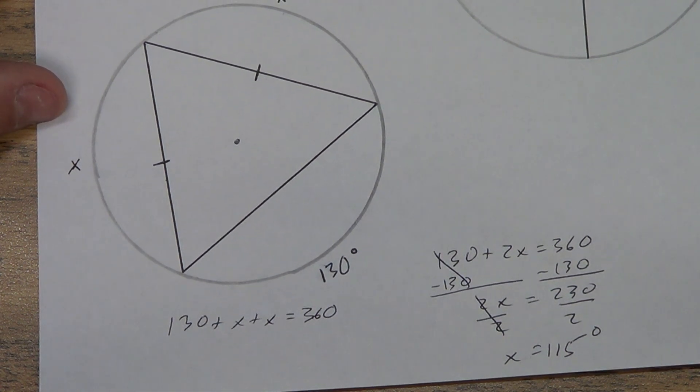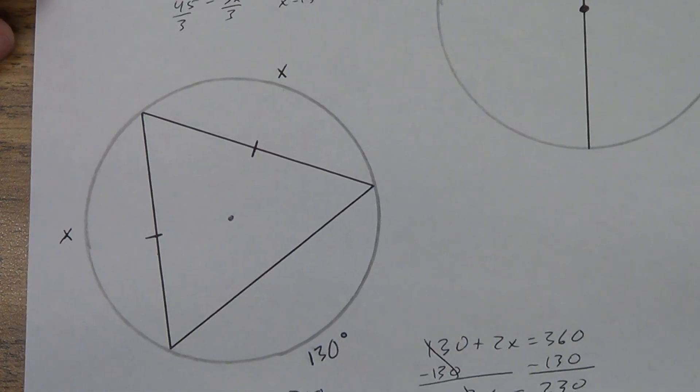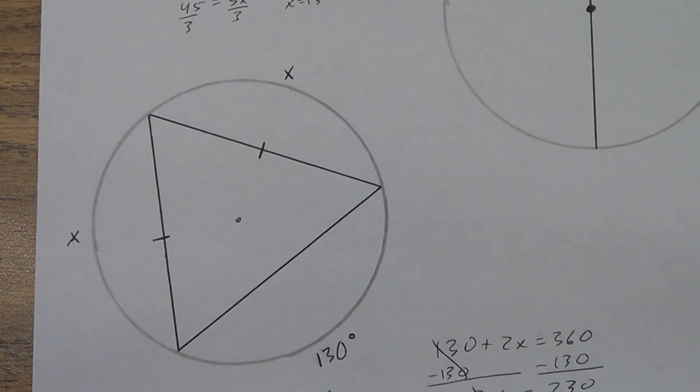So make sure you are able to do the algebra. Make sure you can set up. A lot of times it's equals. Every now and then it might add to equal something like 180 or 360 or something like that. So just make sure you're careful with those. Make sure you also watch that third video. There's another little bit of an application there using some compass work.